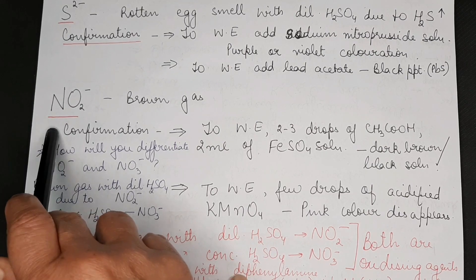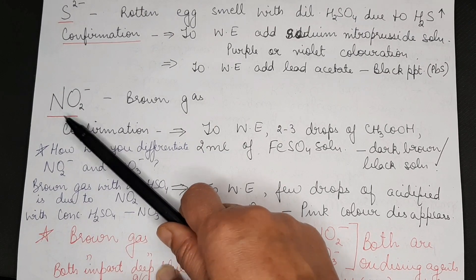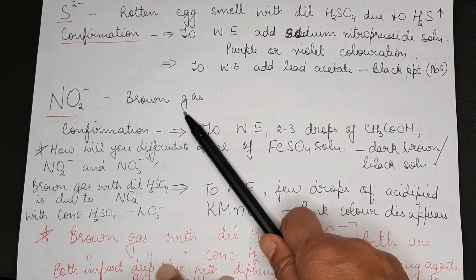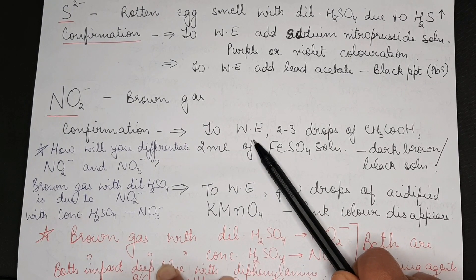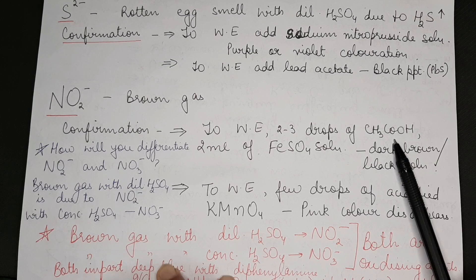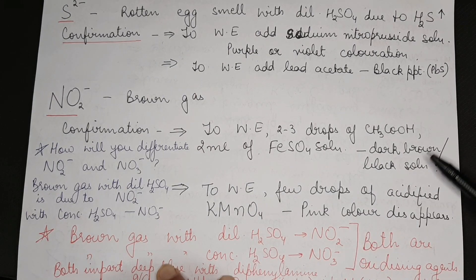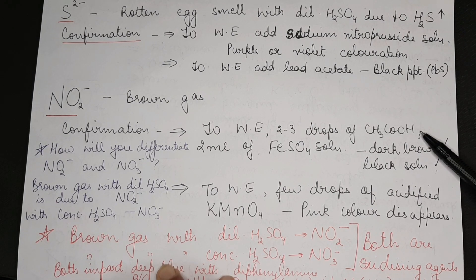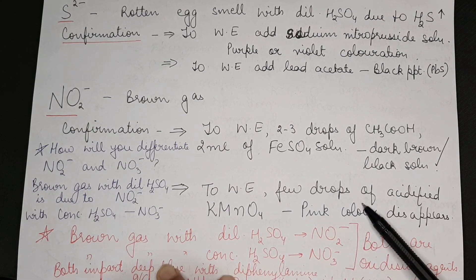Nitrite ion with dilute sulfuric acid gives a brown gas. Confirmation can be done to water extract: add two to three drops of acetic acid, 2 ml of ferrous sulfate solution, you get a dark brown or a black colored solution. Second confirmatory: to the water extract add few drops of acidified permanganate, pink color disappears.